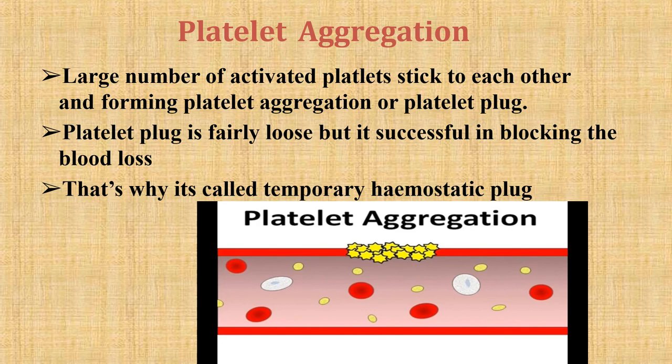After platelet secretion begins, aggregation becomes irreversible. Thrombospondin, an alpha granule protein, helps in irreversibly binding platelets to each other by binding to both the platelet surface receptor and fibrinogen molecule, holding two platelets together and reinforcing the fibrinogen glue of aggregation. Thus thrombospondin and GP2b3a complex are both important for platelet aggregation.